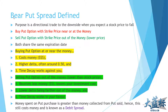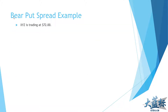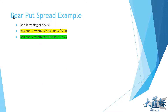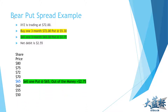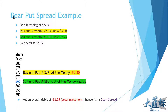Here's an example: a stock trading at $72. We buy a three-month put option for $5.30, then sell a three-month $65 put — lower, further from the share price. The net debit is spending $2.55 instead of $5.30. On the scale, we're selling one at $65 while buying at $72, with a net investment of $2.55 — a debit spread and essentially a subsidized put option.